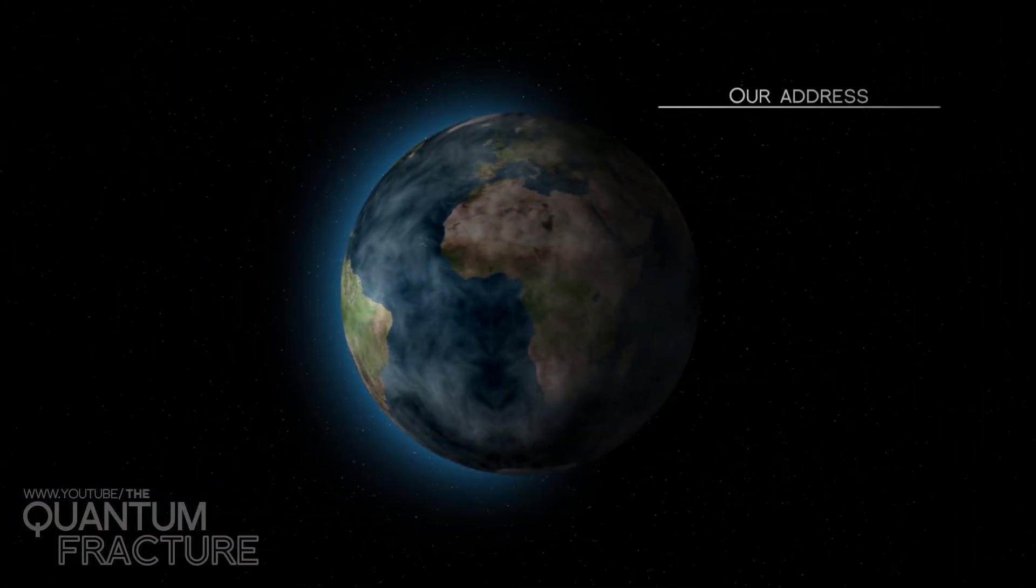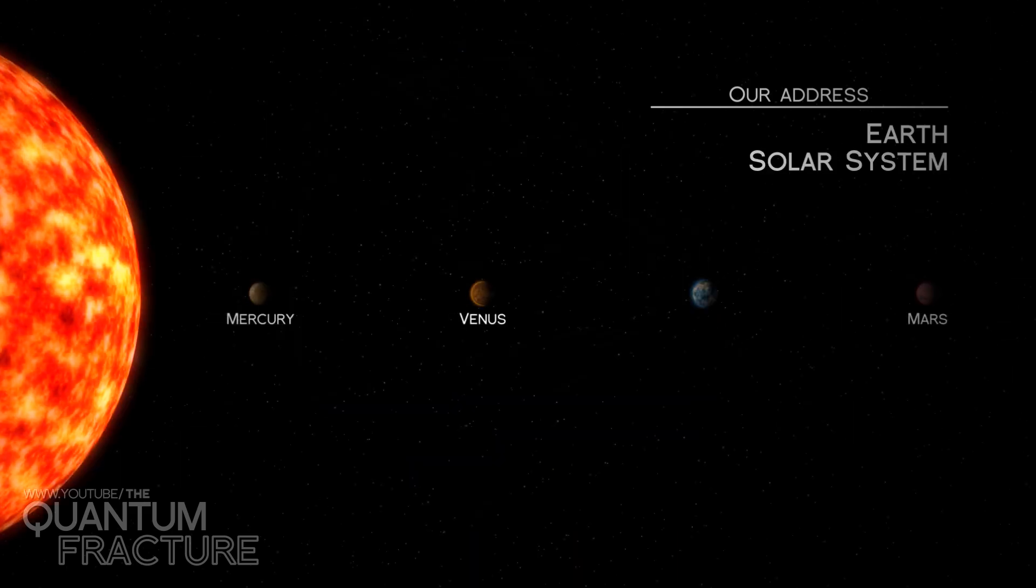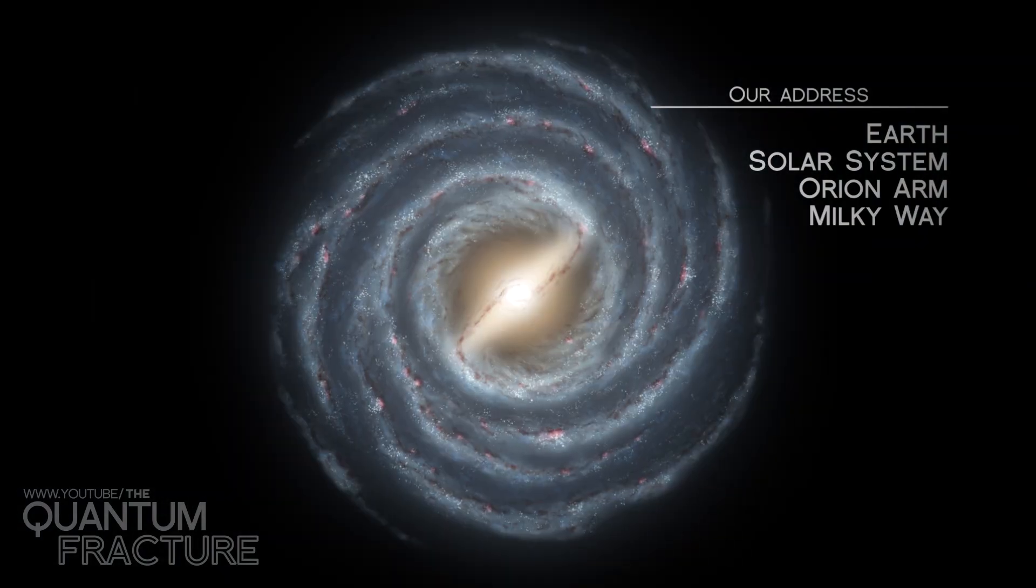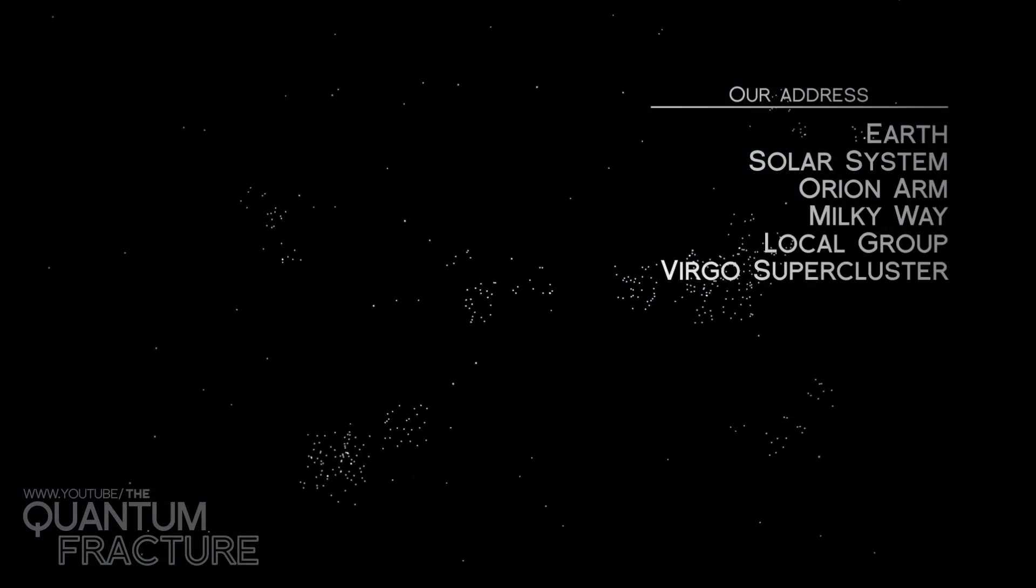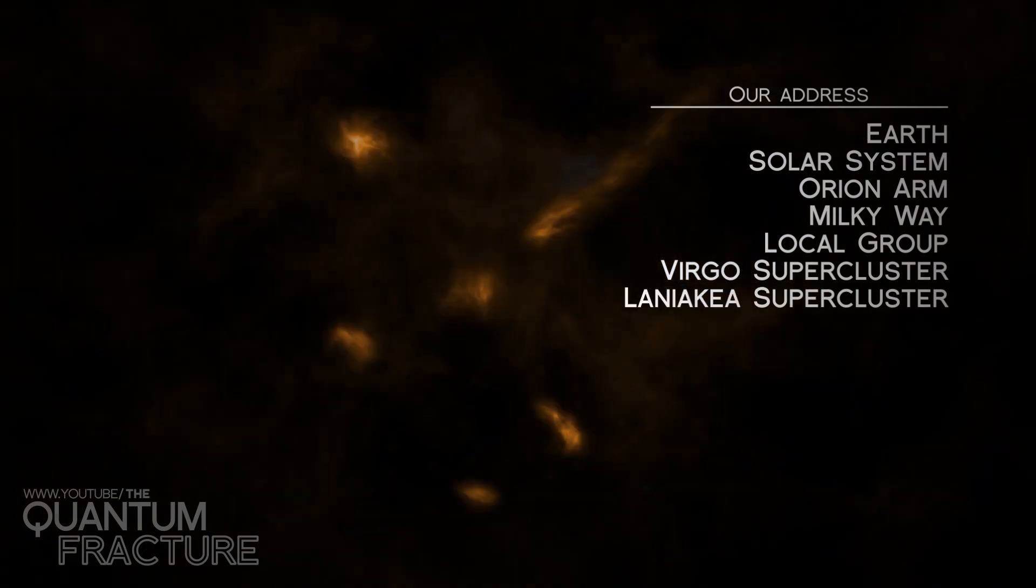In summary, our address is the Earth, Solar System, Orion Arm, Milky Way, Local Group, Virgo supercluster, Laniakea supercluster. Zip code? Well, never mind.